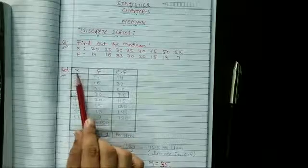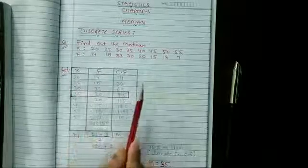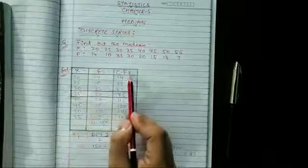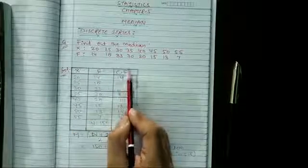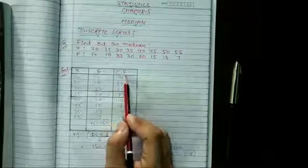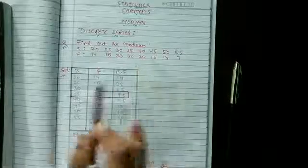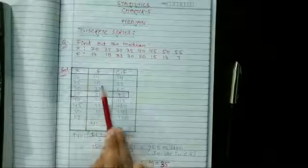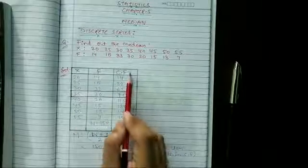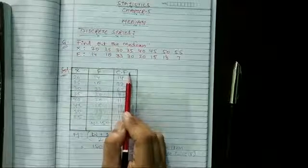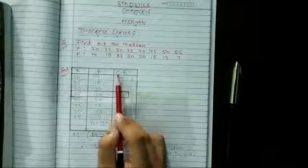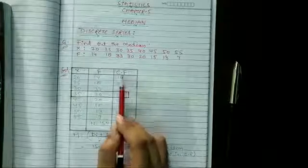So how we will calculate the median? First of all we have to make a table in which X, F, and CF means cumulative frequency we have to record. Now the X and F are given. We have to find out the CF means cumulative frequency.